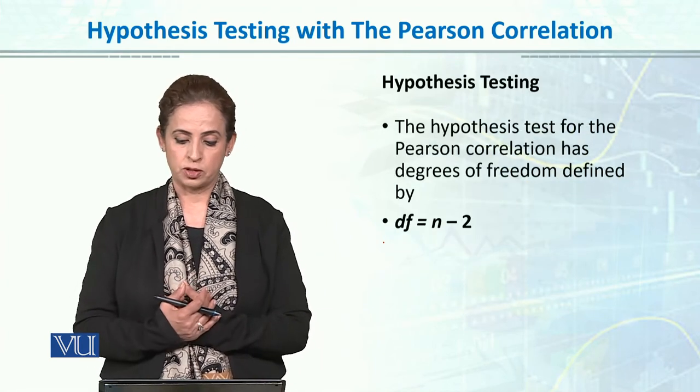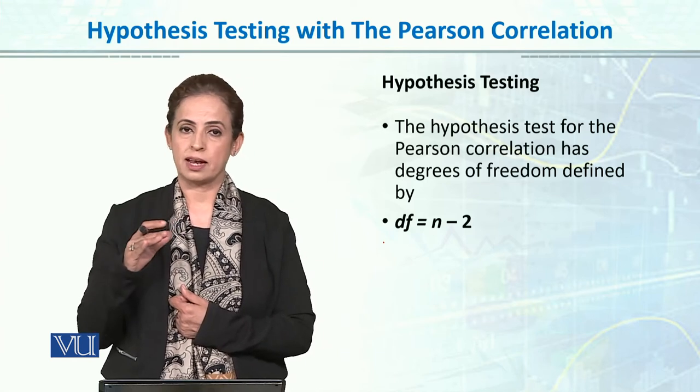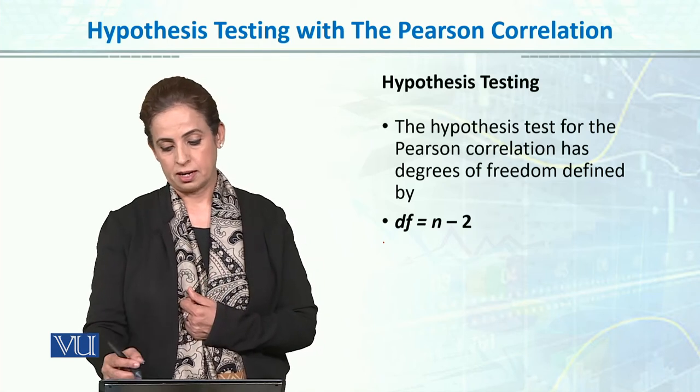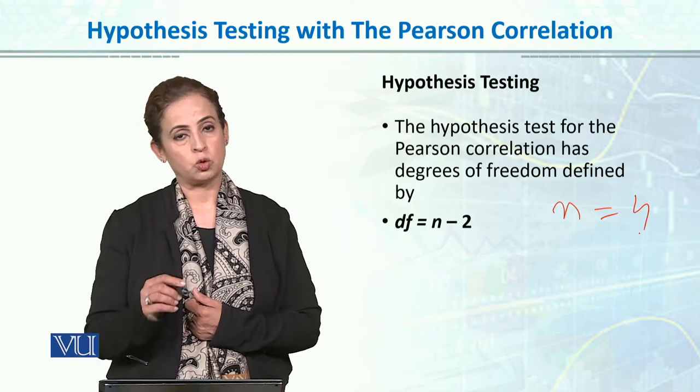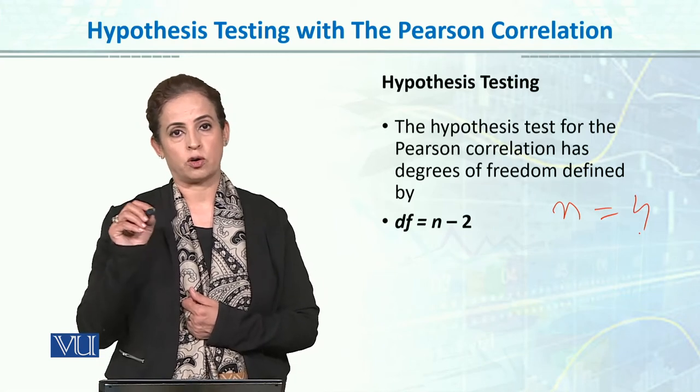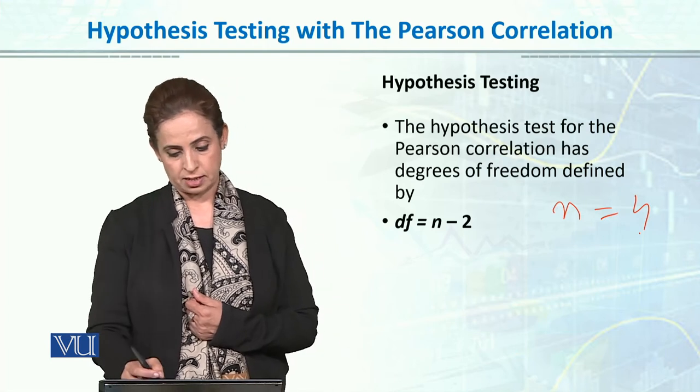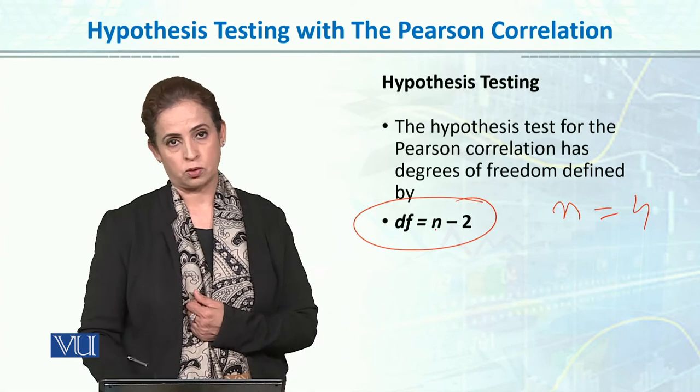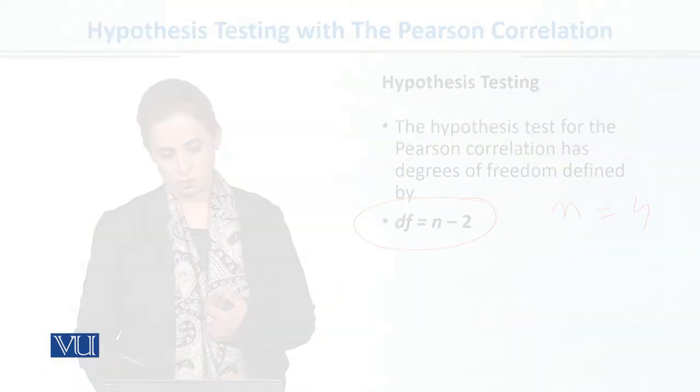The hypothesis test for Pearson correlation has degrees of freedom. After we build the hypothesis, the second step is to determine degrees of freedom. If our n size is 4, then we have to minus 2 because we have to account for both x and y variables. So for any two variables x and y, degrees of freedom will be n minus 2.